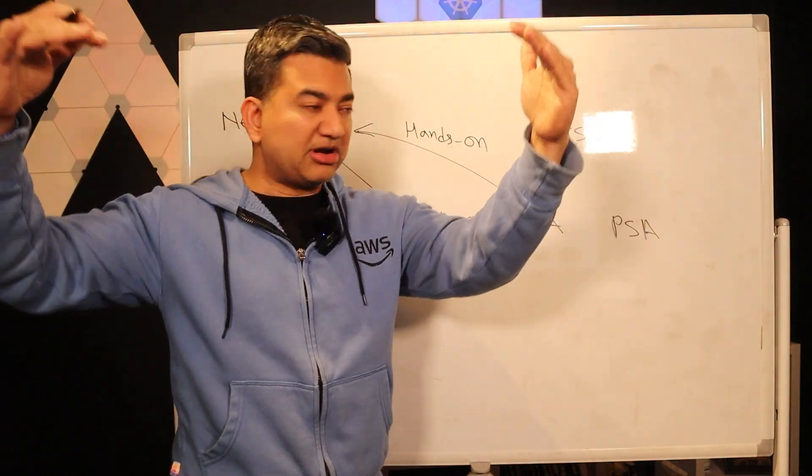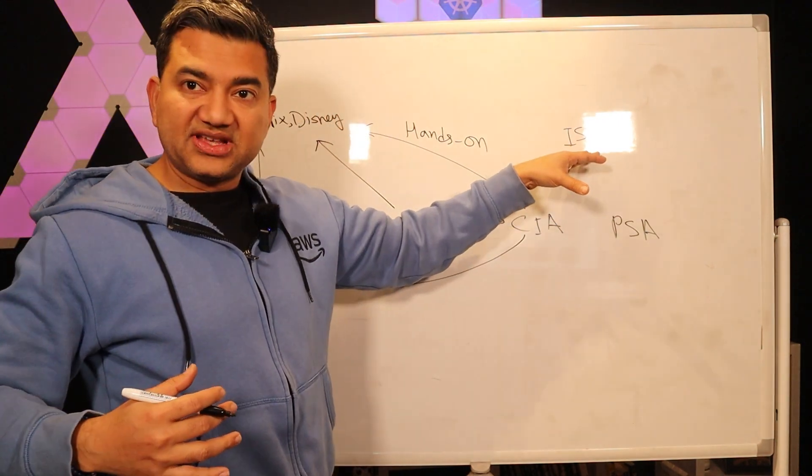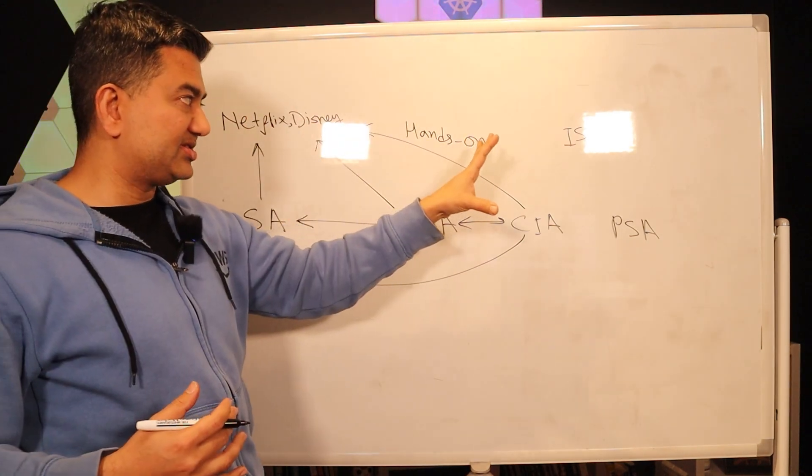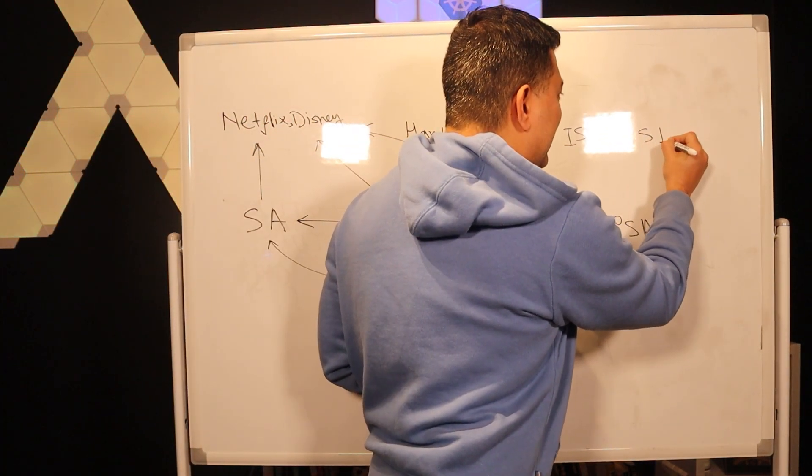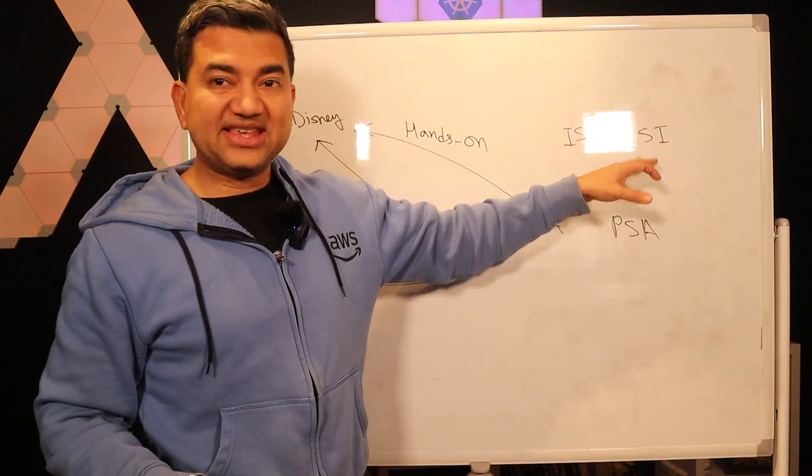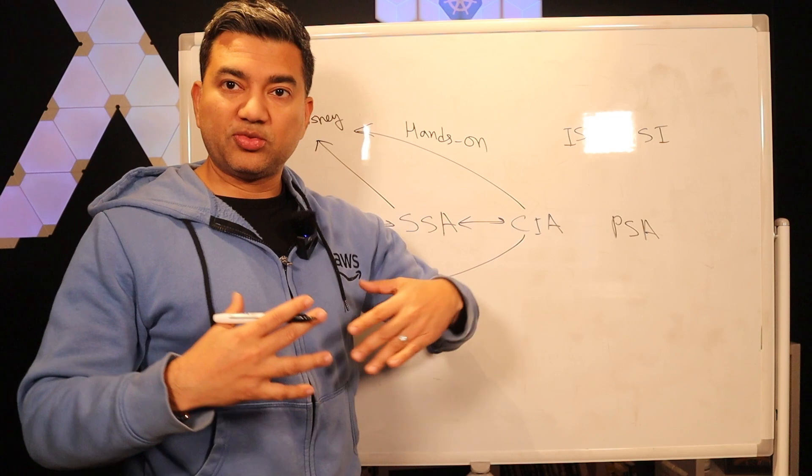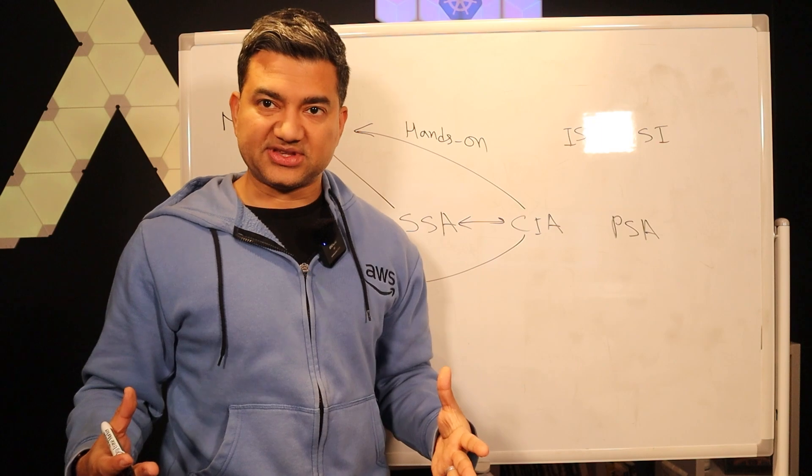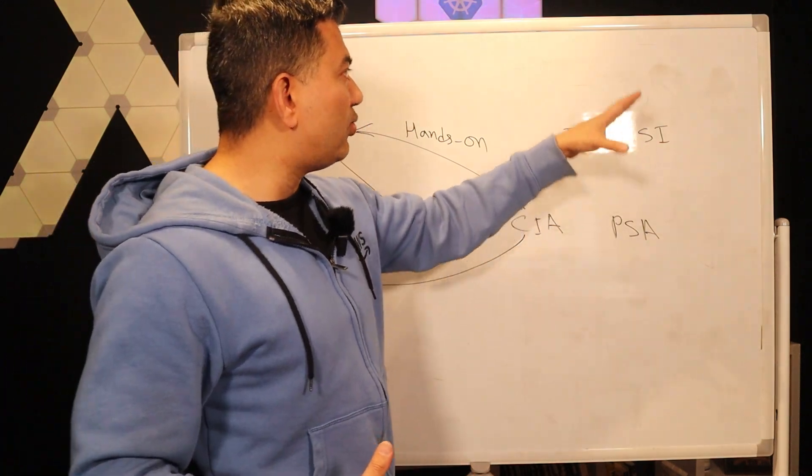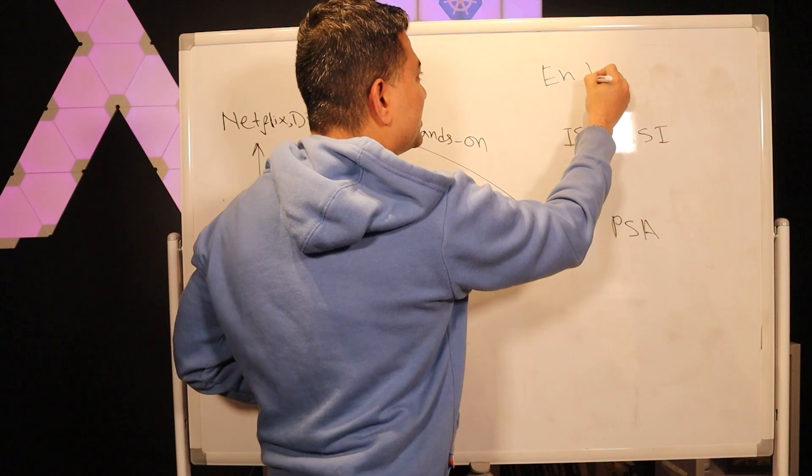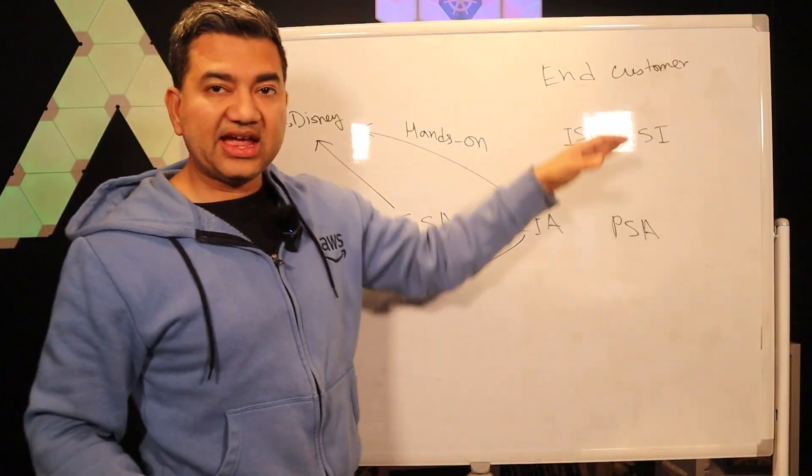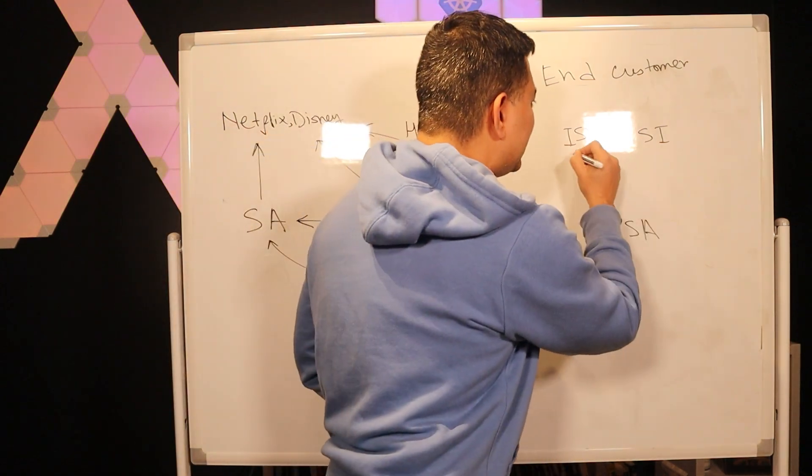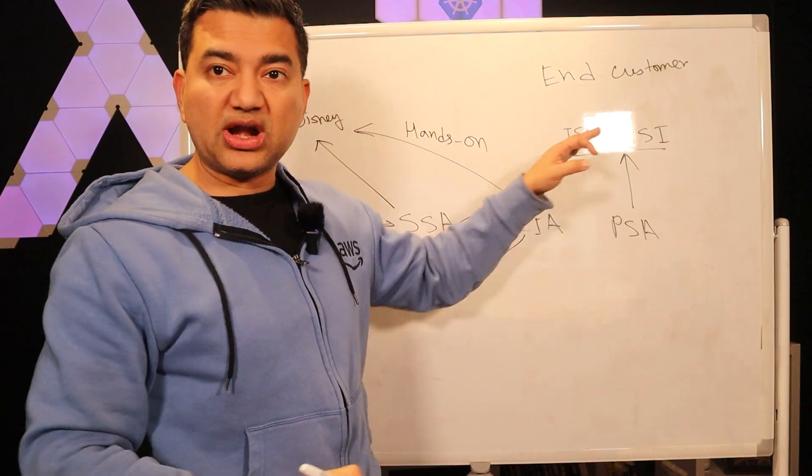Or partners could be SI or System Integrators. System Integrators could be like Cognizant or Accenture, TCS, Infosys, who actually work with the end customer and help them implement, design, etc. So PSA or Partner SA will work with them.